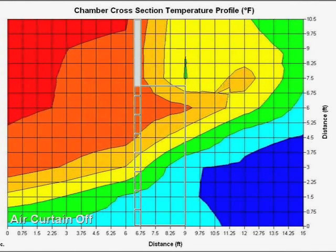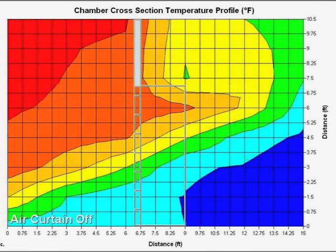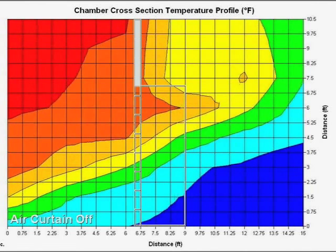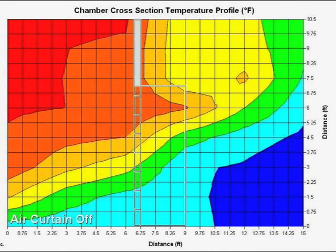With the air door turned off, we can see the cold temperatures in blue where the cold air is flowing through the bottom of the opening and the hot temperatures in red where the hot air is moving through the top of the doorway.